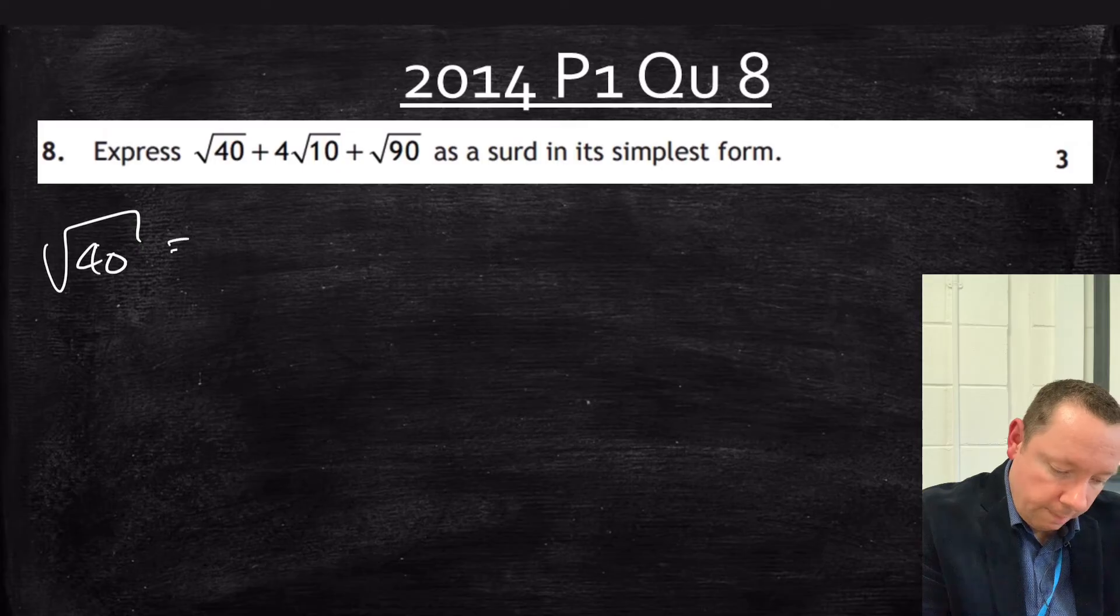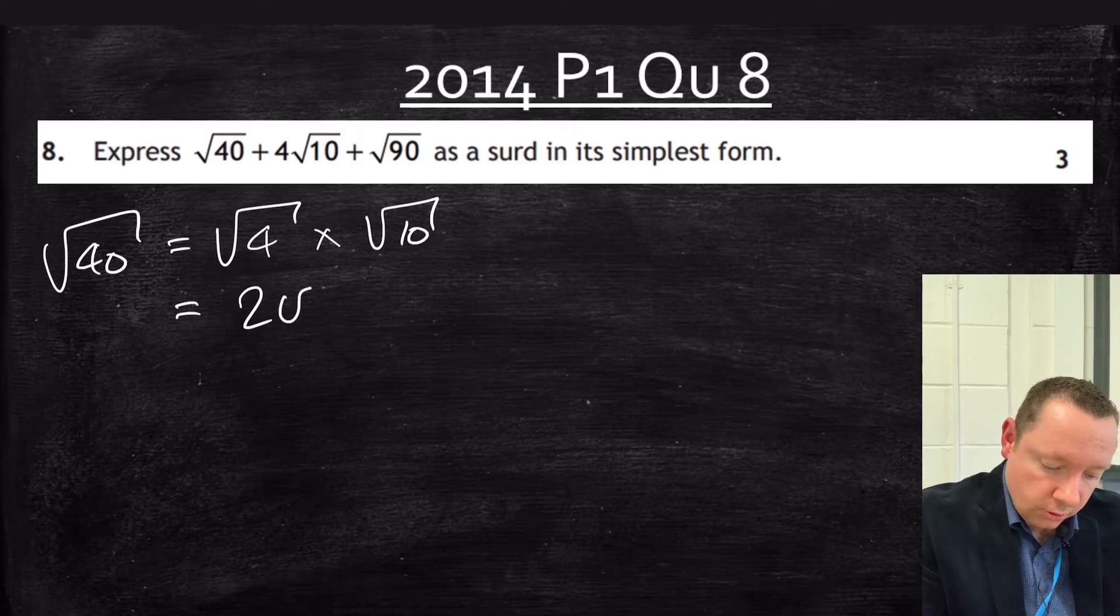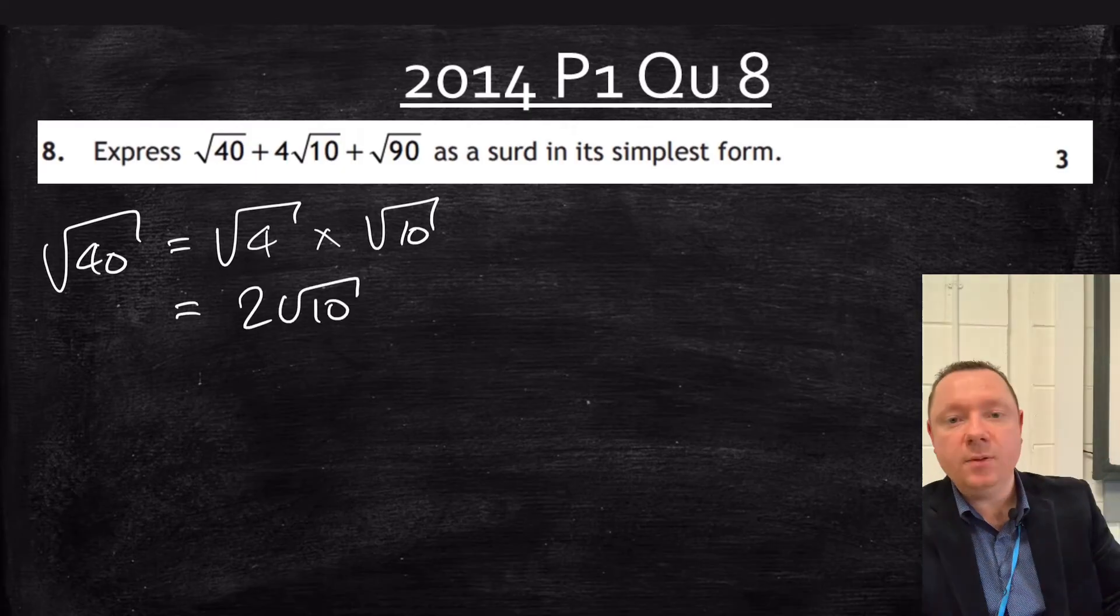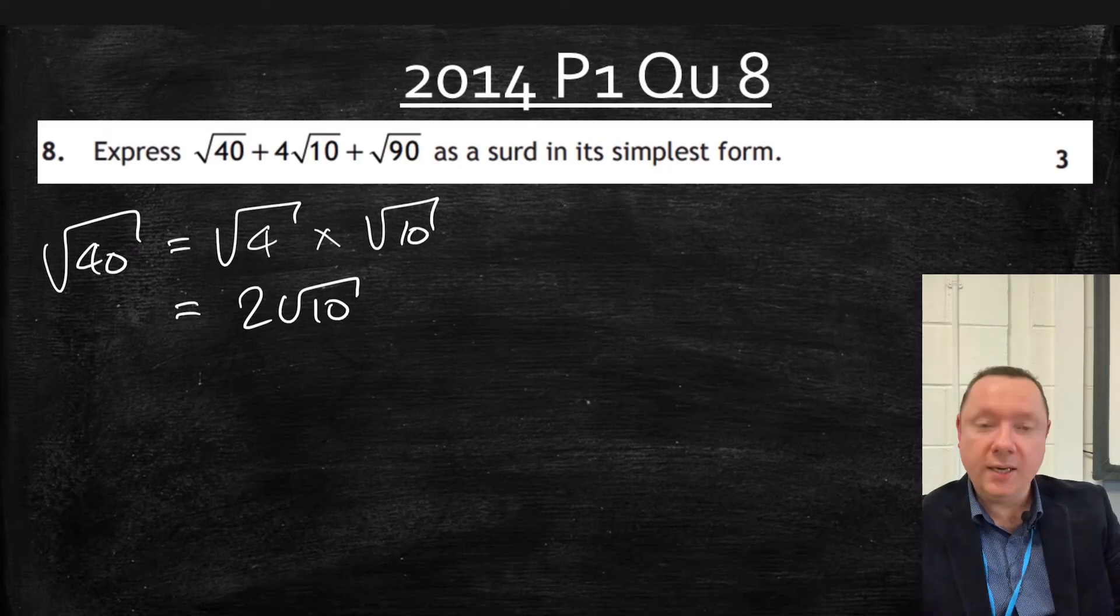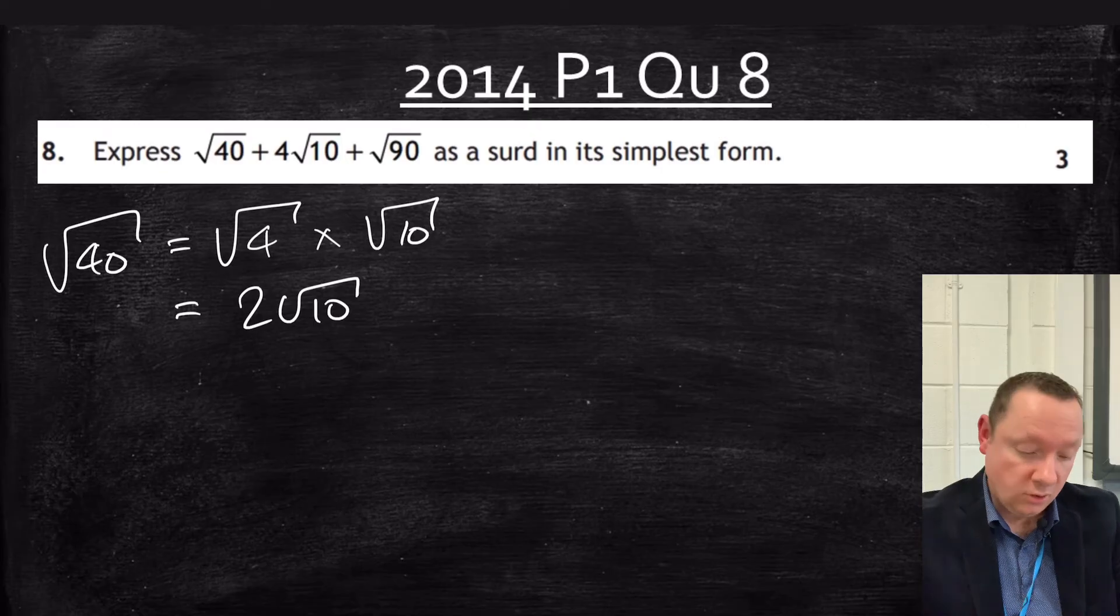Let's start with root 40. That's just 4 times 10, which gives us 2 root 10. Notice that root 10 has appeared. And we now know that root 10 is already simplified because 4 is the biggest square number that goes into 40 and it gives root 10 as an answer. So I don't have to try and simplify my root 10.